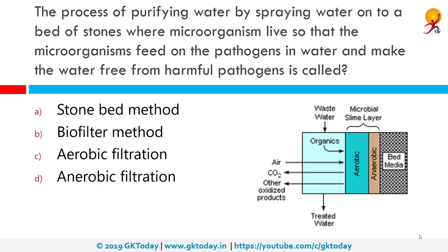The process of purifying water by spraying water onto a bed of stones where microorganisms live, so that the microorganisms feed on the pathogens in water making it free from harmful pathogens, is called the biofilter method. A successful biofilter is much more than a machine — aquarium biofilters work by letting organisms break down waste just like in nature. A biological filtration system provides phases for microorganisms to grow in the tank and can include plants and small invertebrate animals.